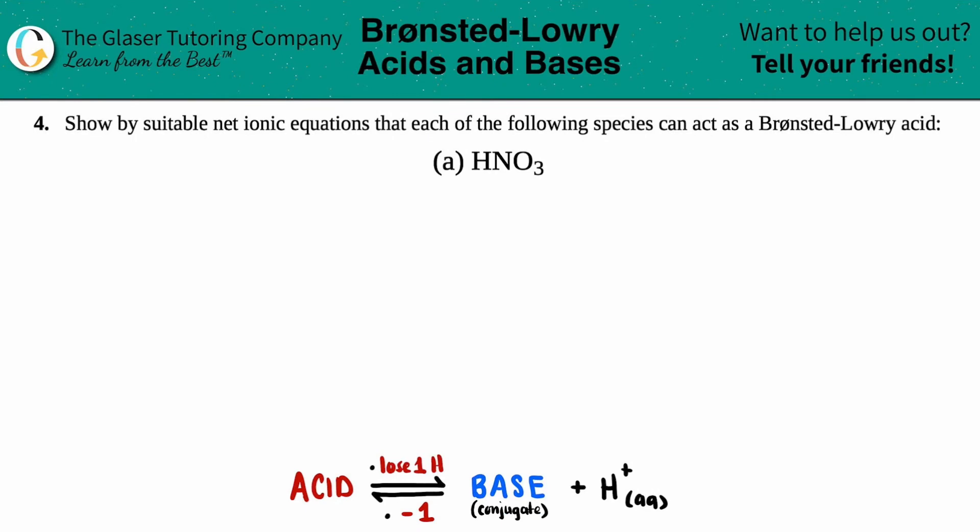Number four, show by suitable net ionic equations that each of the following species can act as a Bronsted-Lowry acid, and then we have letter A.